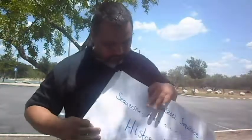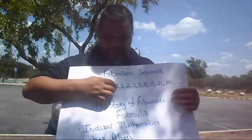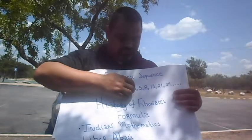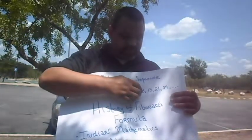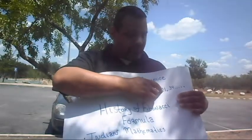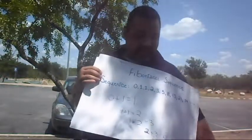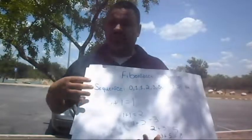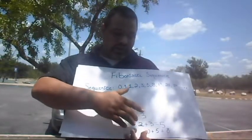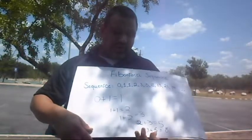The Fibonacci formula is basically a sequence of patterns of numbers. Take a look at the sequence I'm providing here on the board. 0 plus 1 equals 1. 1 plus 2 equals 3. 2 plus 3 equals 5. 3 plus 5 equals 8. 8 plus 13 equals 21, and 13 plus 21 equals 34. Written out in formula format: 0 plus 1 equals 1, 1 plus 1 equals 2, 1 plus 2 equals 3, 2 plus 3 equals 5, and 3 plus 5 equals 8.